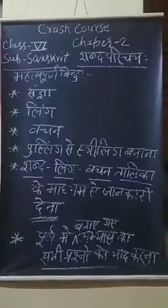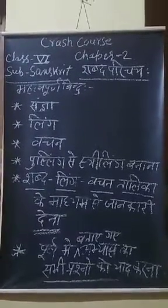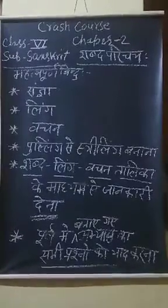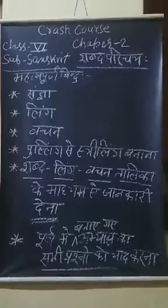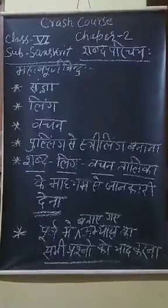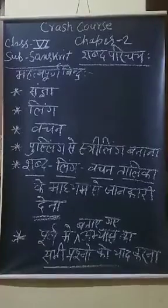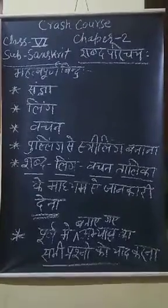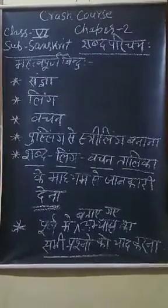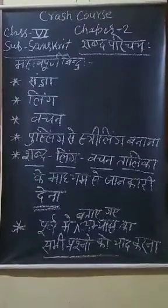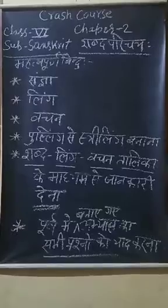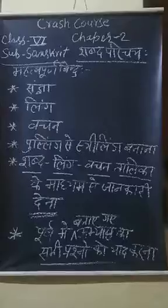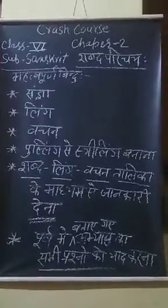द्विवचन: दो व्यक्तियों या वस्तुओं का बोध कराने वाले शब्दों को द्विवचन कहते हैं। जैसे — छात्रौ, फले, कलिके — ये दो का बोध कराते हैं, इसलिए ये द्विवचन हैं। बहुवचन: दो से अधिक व्यक्तियों या वस्तुओं का बोध कराने वाले शब्दों को बहुवचन कहते हैं। जैसे — अश्वाः, वृक्षाः, मित्राणि — ये बहुवचन का बोध कराते हैं।